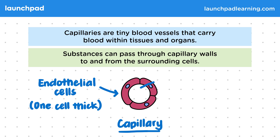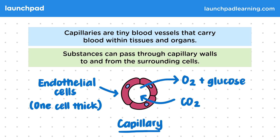Because capillaries are extremely thin, they maximize the diffusion of oxygen and glucose from the blood into cells. Also, as much carbon dioxide as possible can diffuse in the opposite direction. This easy movement of substances across the capillary walls is why they're sometimes described as leaky.